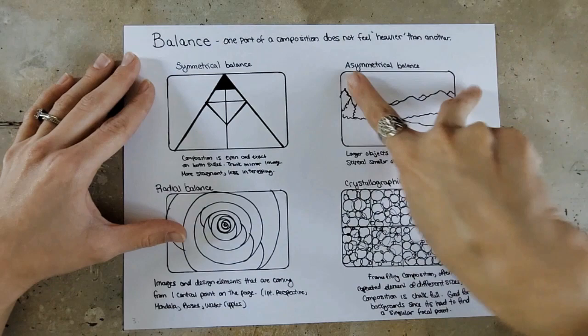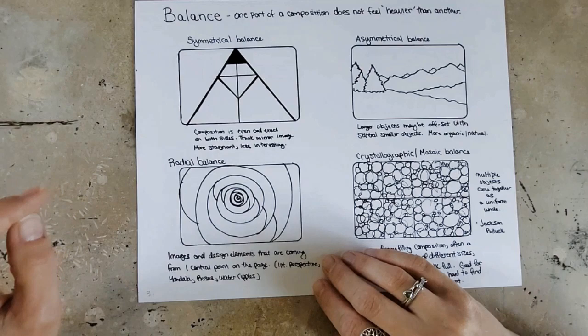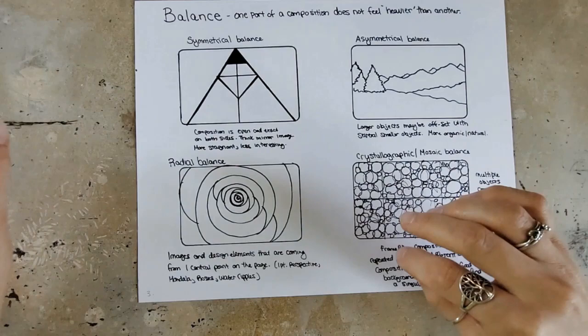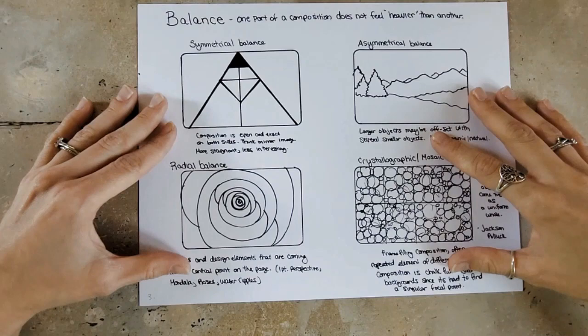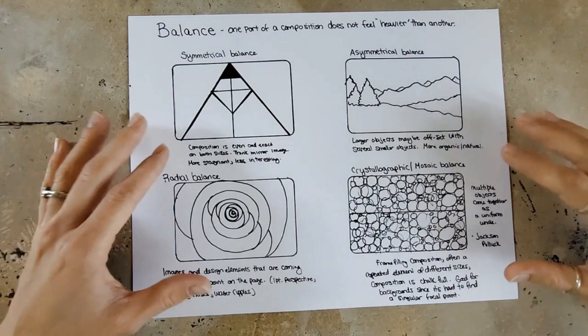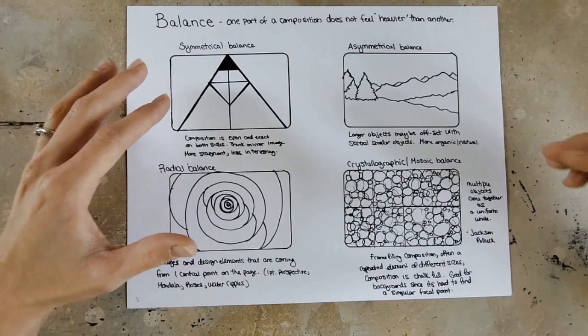Another type is radial balance, where things are coming out from a central point — not necessarily the center, but a central point. Think of things in nature like roses or water ripples. In elements of design, you could do something like a mandala — here's an example of a rose piece I did that's similar to that. And then there's crystallographic or mosaic balance, where you're filling your composition with multiple objects that, when put together, create a balance. I use this composition a lot when doing fruit paintings or close-up views.